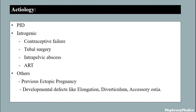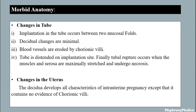Morbid anatomy: changes in the tube — implantation occurs between two mucosal folds, decidual changes are minimal, blood vessels are eroded by chorionic villi, the tube is distended at the implantation site, and tube prolapse occurs when muscles and serosa are maximally stressed and undergo necrosis. Changes in the uterus: the decidua develops all characteristics of a uterine pregnancy except it contains no evidence of chorionic villi.